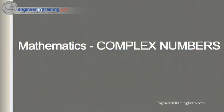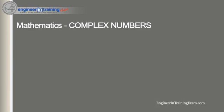Hey, what's going on everyone? It's Justin Dickmeyer from engineerintrainingexam.com, and in this video we're going to review complex numbers. A complex number takes the standard form a plus bi, where a and b are both real numbers — they can be anything: positive, negative, zero, fractions, decimals. The a is called the real part and b is called the imaginary part.